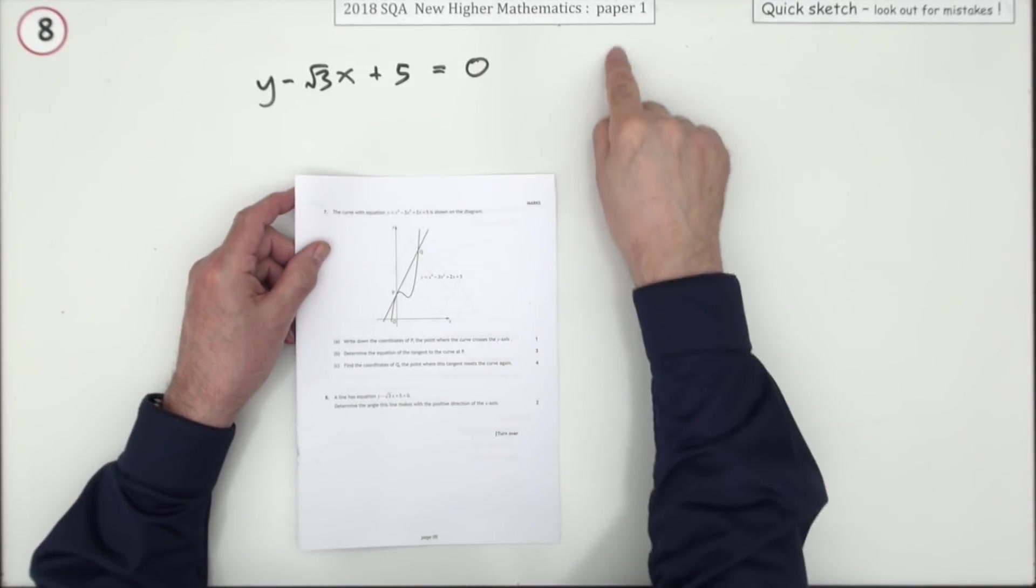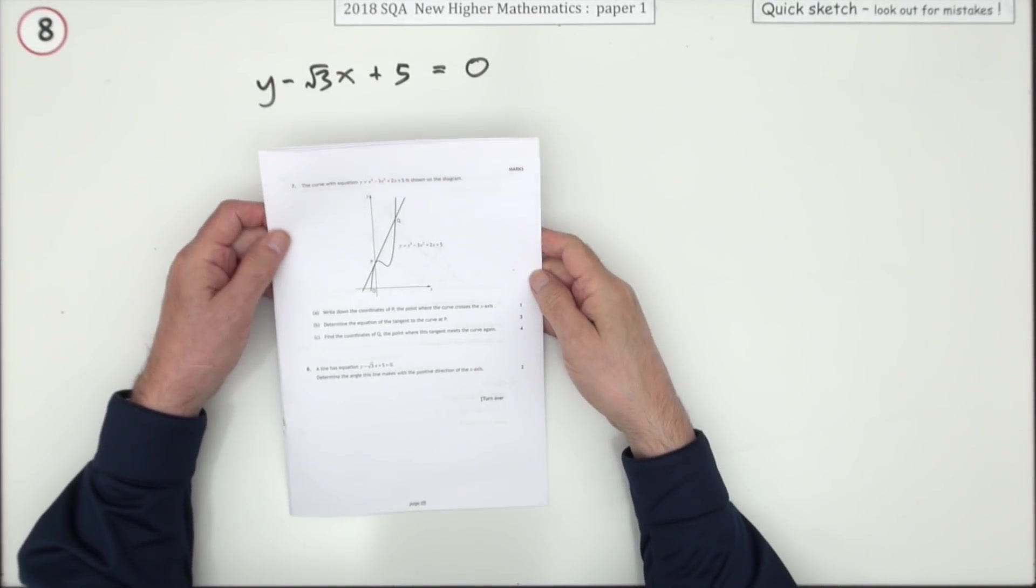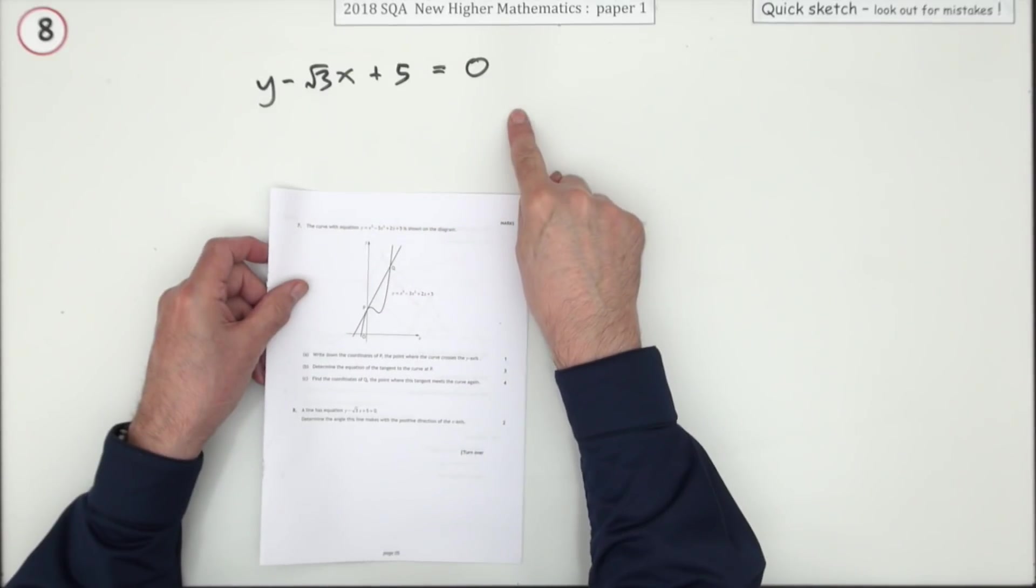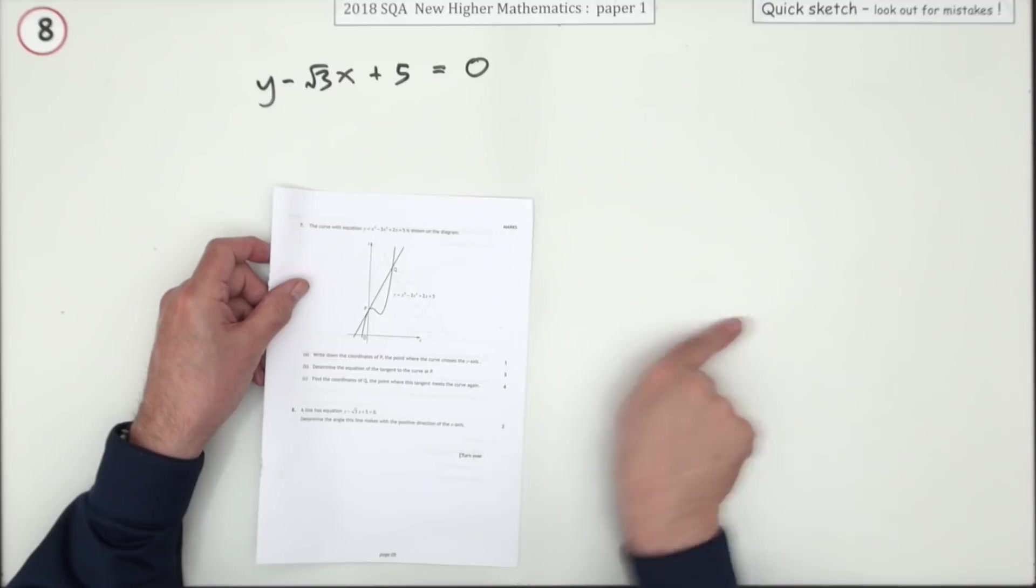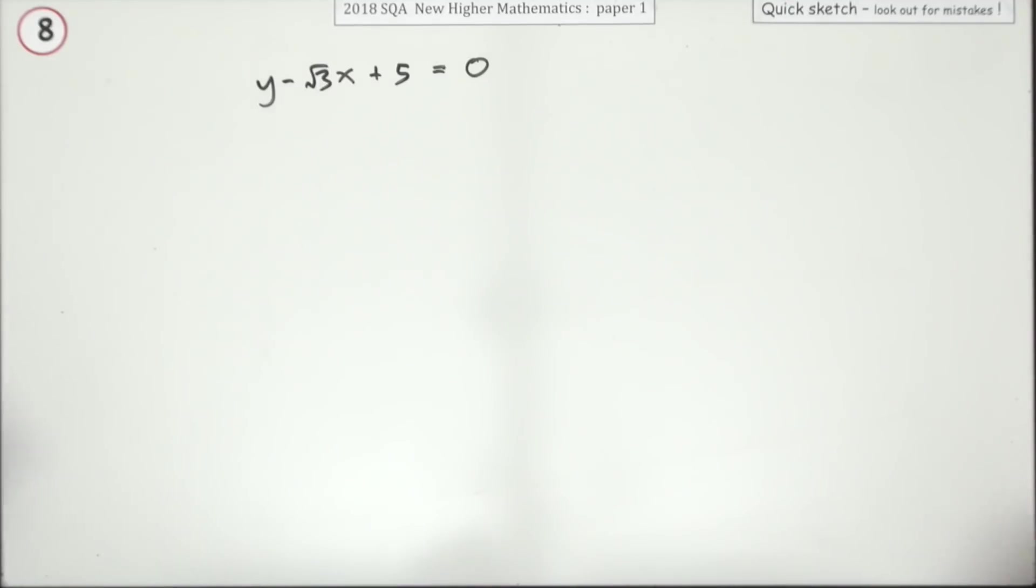Number eight, just a two mark question here from paper one of the 2018 higher maths. Here's the equation of a line. What angle does that line make with the positive direction of the x-axis?